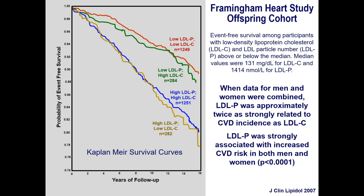Looking at the two worst survival curves: high LDL particle count in blue, high LDL particle count in gold. It didn't matter whether the LDL cholesterol was high or low. That gold curve — the worst survival curve — almost certainly represents an insulin-resistant or diabetic patient with small triglyceride-rich LDL particles, and that's why they had such high LDL particle counts. So if you had to bet the house, bet it on LDL particle counts, not LDL cholesterol measurements.